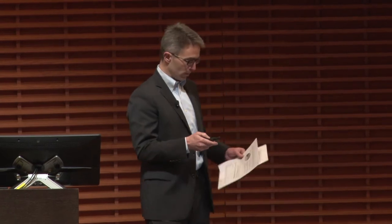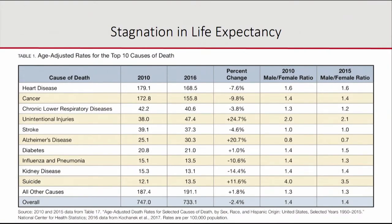You can get a sense of this from a table of age-adjusted mortality rates for the top 10 causes of death in both 2010 and 2016, along with the male-female ratio. For basically every one of these conditions, except Alzheimer's, men are more likely to die than women. From 2010 to 2016 you see about an 8% reduction in heart disease and 10% in cancer, but the unintentional injury rate is up 25% and the suicide rate up about 12%.